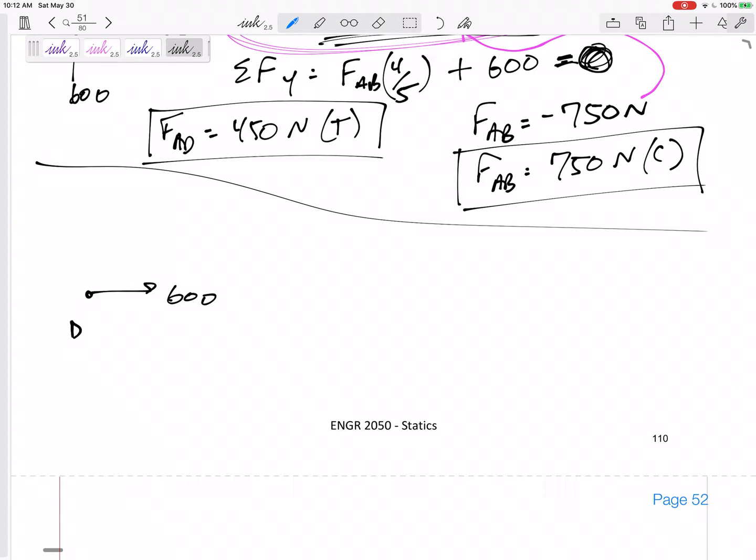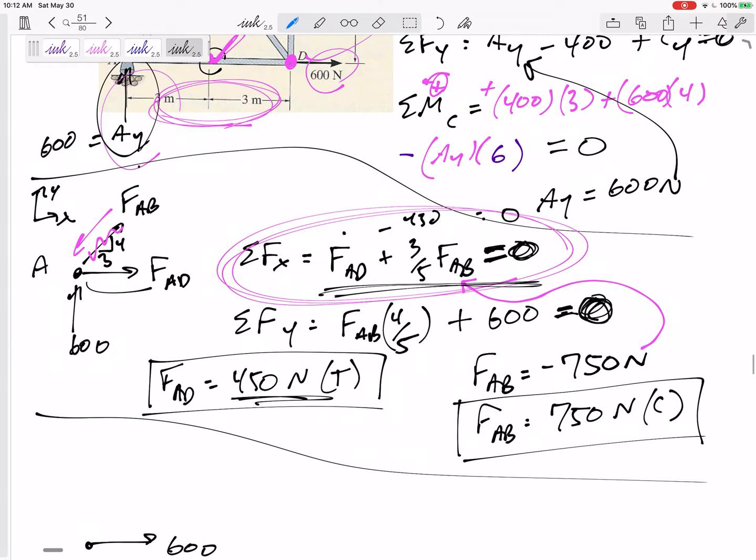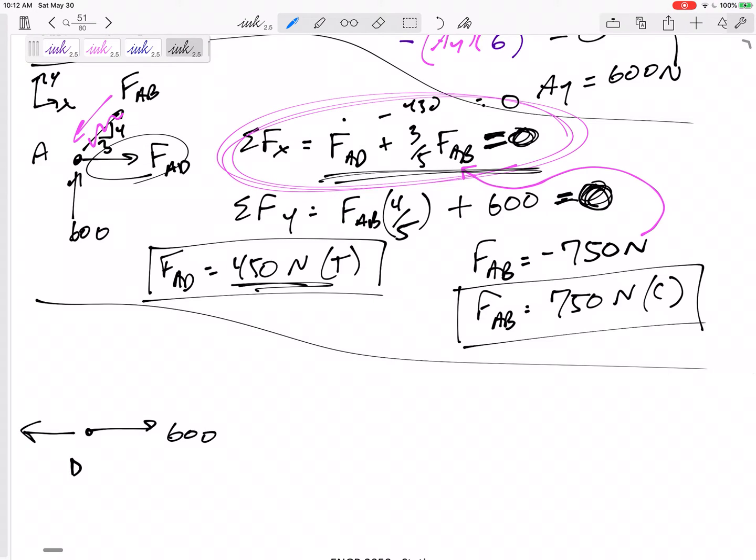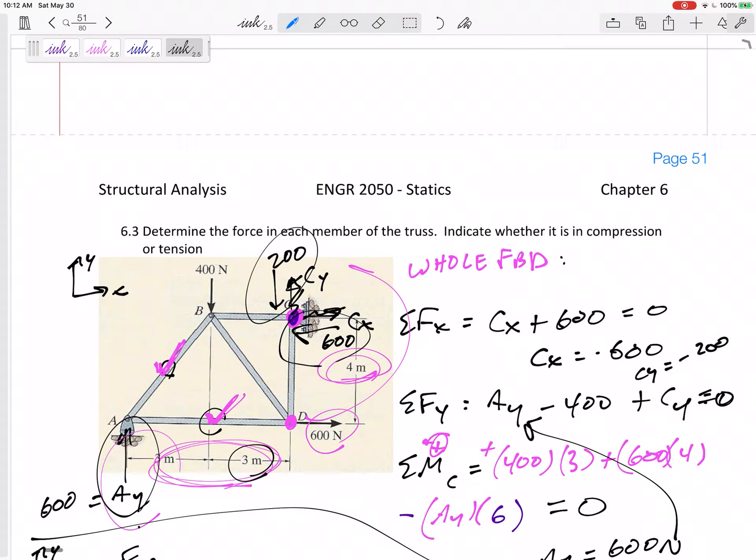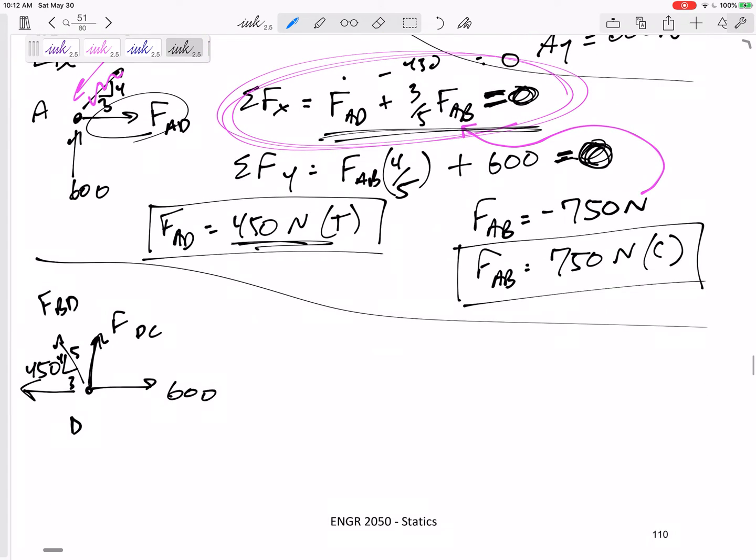Here we go to D. I've got 600 that way. I solved for this one, this one was 450, to the right. But this one, it's to the left because it's just tension. Tension is always pulling at every joint. 450 to the left. FDC, I don't know, but I know it's straight up. And FBD, I don't know, but I know its direction is at a 3, 4, 5. And I got that 3, 4, 5 just from these dimensions right here.